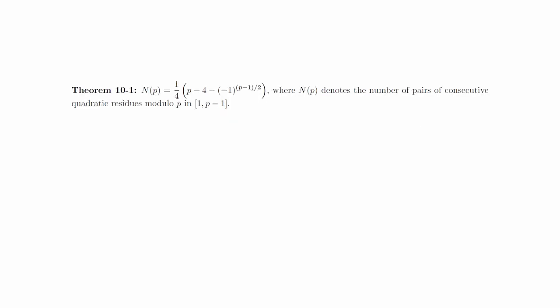Theorem: we have an explicit formula for n of p where n of p denotes the number of pairs of consecutive quadratic residues modulo p in the interval from 1 to p minus 1. We will save the proof of this theorem for class. This video will be spent building up the machinery that we'll need.